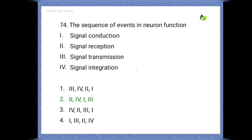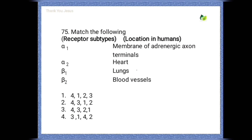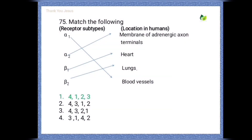Match receptor subtypes with their location in humans. Alpha-1 receptor subtypes are present in blood vessels; alpha-2 receptor subtypes are present in the membrane of adrenergic axon terminus; beta-1 receptor subtypes are present in the heart; beta-2 receptor subtypes are present in the lung.